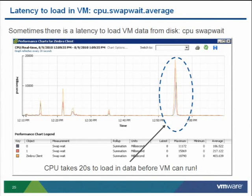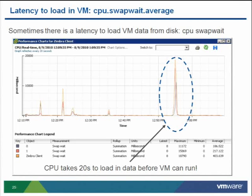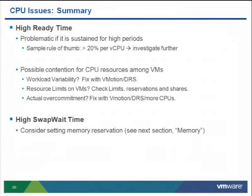One final CPU topic: swap wait time. When ESX takes time to pull in memory pages for a virtual machine, that's called swap wait time. This actually happened while preparing this talk — a Java IDE VM took a long time to respond on every click. Looking at the chart, the swap wait time was approximately 20,000 milliseconds — 20 seconds. Every click required 20 seconds just to pull in memory for that VM. You can use memory reservations to mitigate this by guaranteeing a certain amount of memory is always resident on ESX.